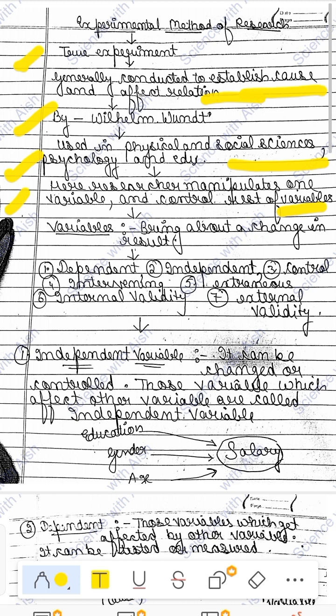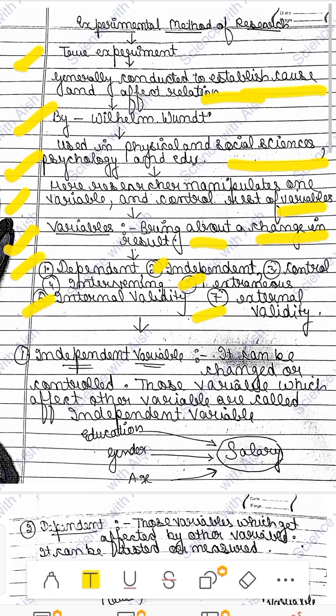Variables are what bring about change in the result. In the experimental method, you must keep attention to which variables are being used. The types of variables are: dependent, independent, control, intervening, extraneous, and we also study internal validity and external validity.